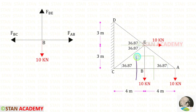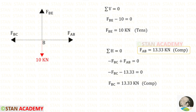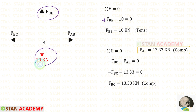Now let us make the second section like this and take this part for analysis. First, let us apply sigma V equals 0. FBE is acting upwards so it will be positive. 10 is acting downwards so it will be negative. For FBE, we will get a positive value, that means it is tensile.